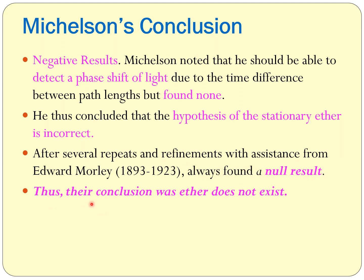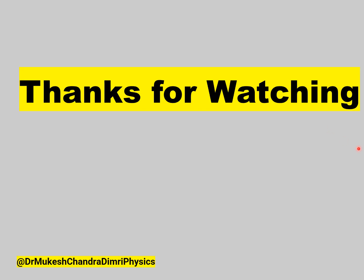Their conclusion was that ether does not exist. So this whole experiment was a failed experiment, but other scientists got ideas from it and tried to explain why it failed. We will discuss in the next lecture how other scientists explained this negative result.